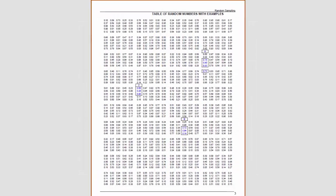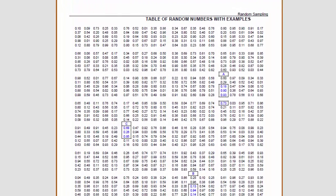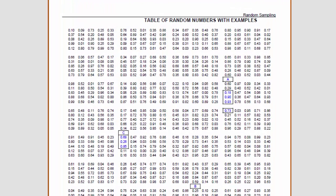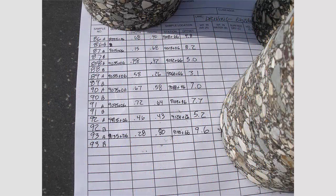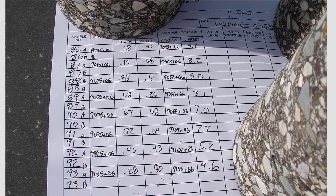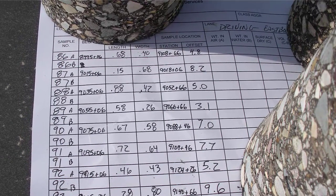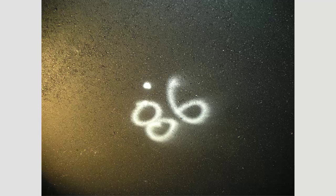Core locations are determined by a representative of the North Dakota DOT using a random method. Once determined, the random locations are written on state form number 10071, Compaction Control. That form is taken to the field and the DOT inspector marks the locations on the roadway for the contractor's coring crew. The sample number assigned to each core is marked on the road.